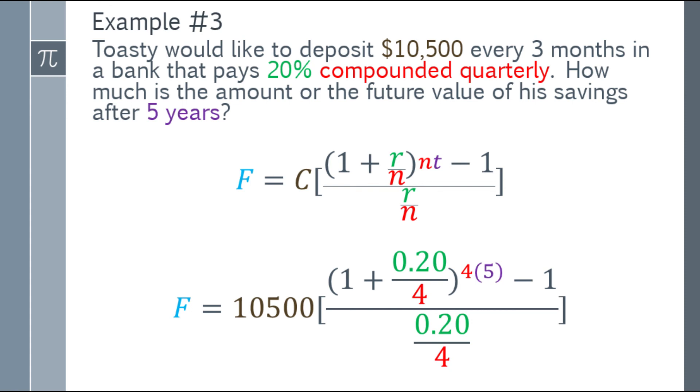For the numerator: 1 plus r over n. R is 20%, compounded quarterly, so r over n is 0.20 over 4, plus 1. The exponent is 4 times 5 (n times t). Subtract 1, that's the numerator. Denominator is 0.20 over 4.